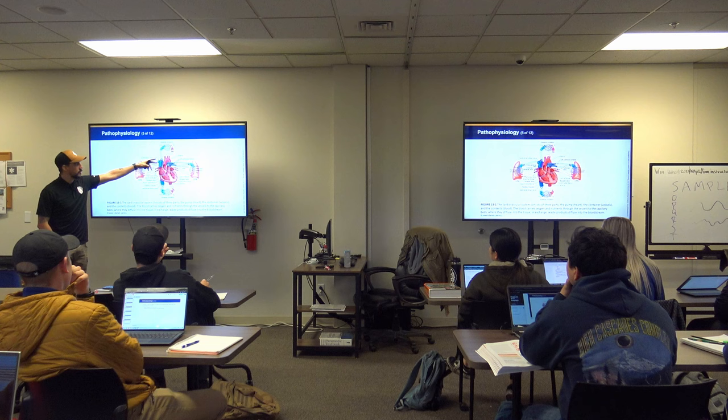The next type of shock is distributive shock, which results from widespread dilation of small arterioles, small venules, or both. When vasculature dilates, blood pressure drops. If everything is massively dilating at the same time, blood pressure drops significantly.